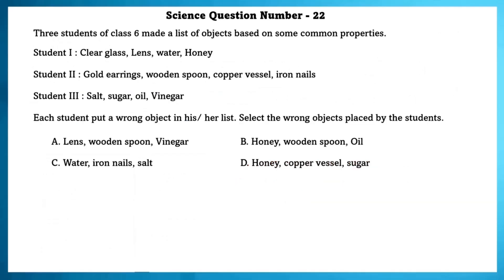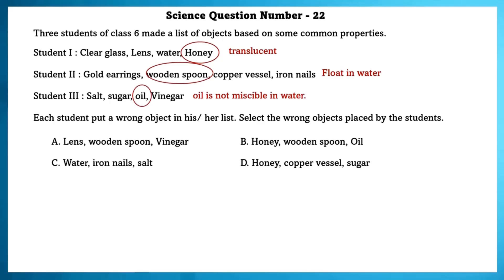Science question number 22. Three students made a list of objects based on common properties, each putting one wrong object in their list. In student 1's list, honey is the wrong object because it is translucent while the others are transparent. In student 2's list, a wooden spoon floats in water while the others sink. In student 3's list — salt, sugar, oil, vinegar — oil is not miscible in water while the others are miscible in water.